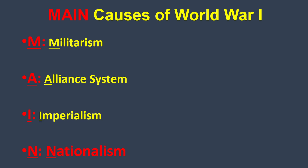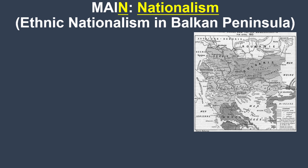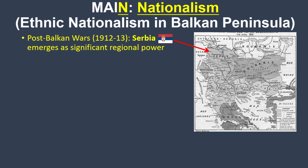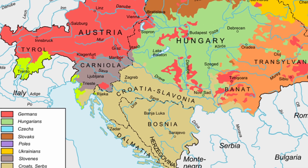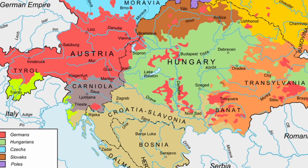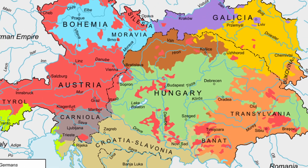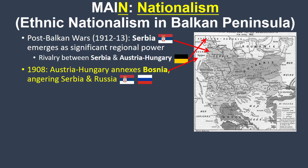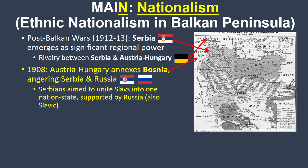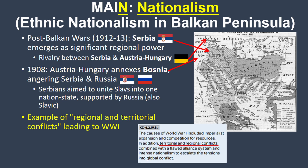Let's start with nationalism — firstly, ethnic nationalism in the Balkan Peninsula. After the Balkan Wars, Serbia emerged as an important regional power and came into direct rivalry with Austria-Hungary. Here's a map of the many different ethnicities in Austria-Hungary in the early 20th century, and you can see how ethnic nationalism would have been problematic for them. But they continued expanding eastward, even officially annexing Bosnia in 1908, which angered the Serbians, who wanted to incorporate all the Slavs into their own ethnic nation state. The Russians, who also identified as Slavic, supported Serbia. This is the most direct example of what the College Board describes as regional and territorial conflicts as a major cause of World War I.